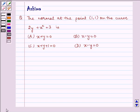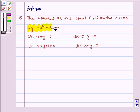Hello and welcome to the session. Let us understand the following question which says the normal at the point (1,1) on the curve 2y plus x squared equals 3 is: